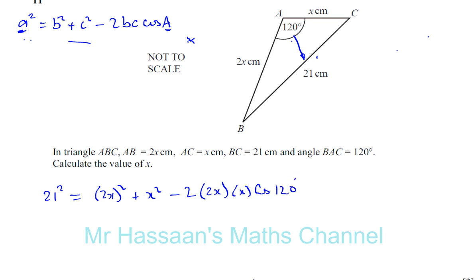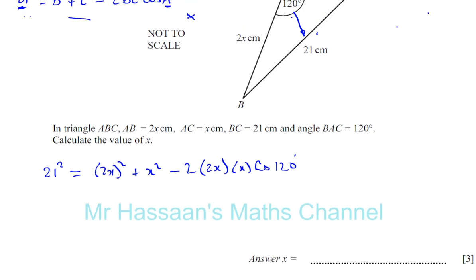I'll just leave that as 21 squared for now. 21 squared is equal to, now when I square 2x squared, I'm going to get 4x squared. 2x times 2x is 4x squared plus x squared. Minus, and I'm going to have 2 times 2x times x, that's going to give you minus 4x squared.